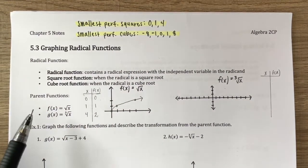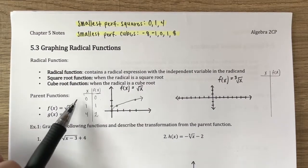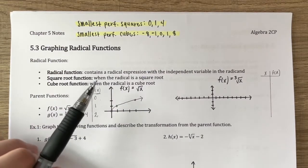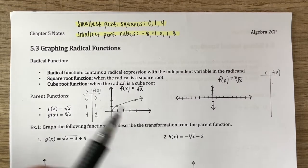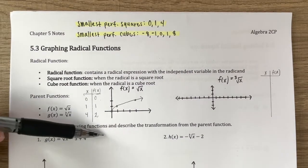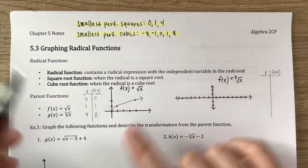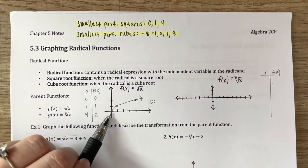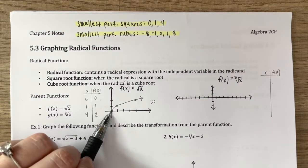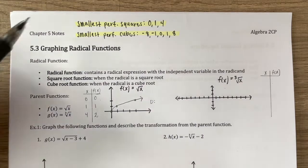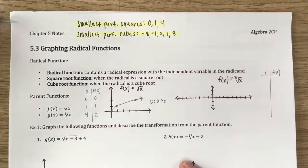If I had picked a number smaller than 0, that would have been a negative number inside the radical, which gives an imaginary number — something we can't graph. So this graph ends right here, at (0, 0). There are no points to the left of this point, and no points below it either, because the graph keeps steadily increasing to the right. So the domain must be x is greater than or equal to 0.